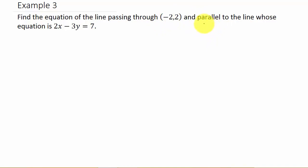But what they do tell us is that the line that we're looking for is parallel to this one. So if we need to find the slope of this line, because if you remember, lines that are parallel have the same slope. So our line is going to have the same slope as this one.